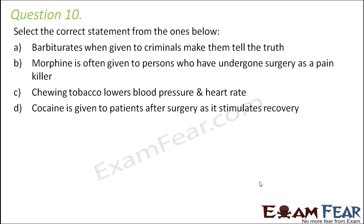Option B: Morphine is often given to persons who have undergone surgery as a painkiller. This is a correct statement because morphines are analgesics — they are painkillers. Morphine is a quite effective analgesic that relieves severe pain. It falls under opioid narcotic analgesics, works on the central nervous system, and changes the way our body feels and responds to pain.